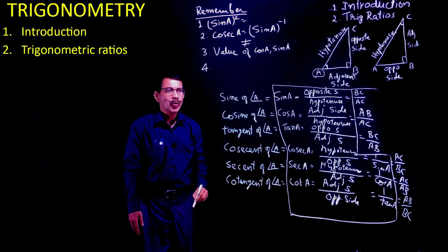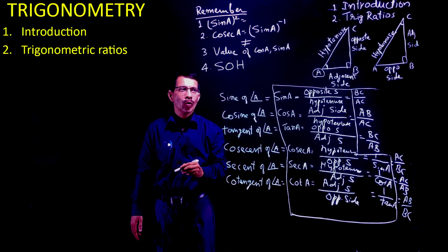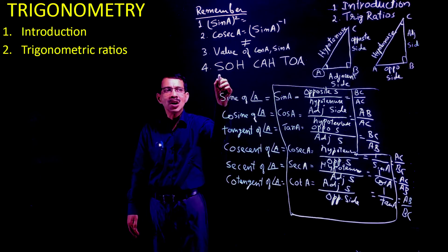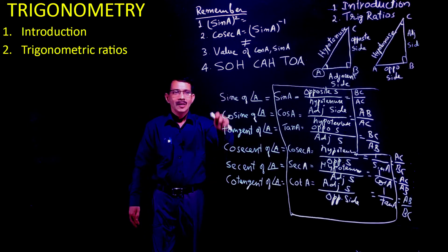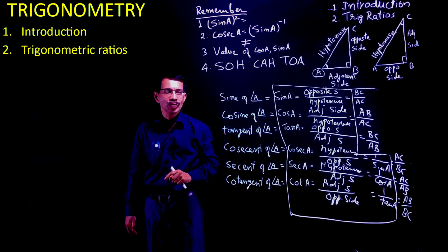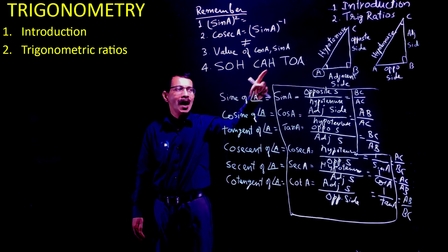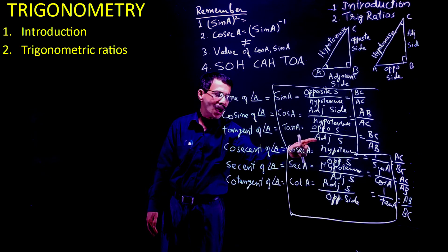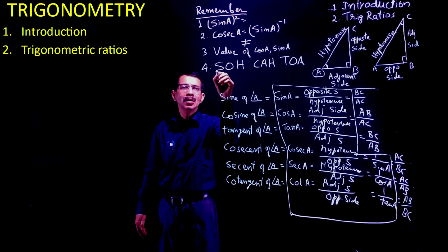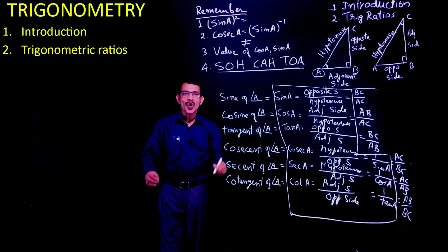How to remember them? The method is: S-O-H, C-A-H, T-O-A. It is the word SOH-CAH-TOA. Sine equals Opposite over Hypotenuse. Cos equals Adjacent over Hypotenuse. And Tan equals Opposite over Adjacent. You have to remember these trigonometric ratios by remembering this word: SOH-CAH-TOA. Remember this perfectly.